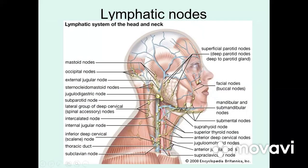The facial lymphatic nodes — we have from four to nine — located in the subcutaneous tissue of the face, can be divided into groups: buccal lymphatic nodes, nasolabial, nodus molaris, and nodus mandibularis. The lingual lymphatic nodes — from one to five — are located at the level of the root of the tongue. The submental lymphatic nodes — from one to eight — are located in the subcutaneous tissue of the submental region.